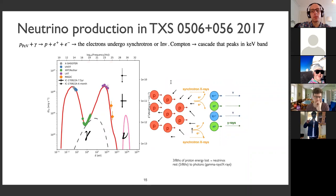If we can't increase the efficiency, we can still increase the number of protons — another semi-free parameter. That also increases neutrino production. However, protons produce not only neutrinos; they also produce electrons and gamma rays. For this particular source, an important process was Bethe-Heitler pair production. At the same time as we have neutrino production, we have pair production.